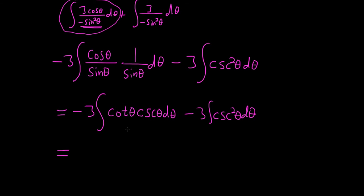When you're integrating cotangent cosecant, you ask yourself, what's a function whose derivative is cotangent cosecant? Well, the derivative of cosecant is negative cosecant cotangent. So we already have a negative here. So this whole thing here is just going to become 3 cosecant. If you take the derivative of cosecant, you get negative cosecant cotangent. Beautiful. And then when you're integrating cosecant squared, you ask yourself, what's a function whose derivative is cosecant squared? Well, the derivative of cotangent is negative cosecant squared. So we already have the negative here. So we plus 3 cotangent. It's so rigged.